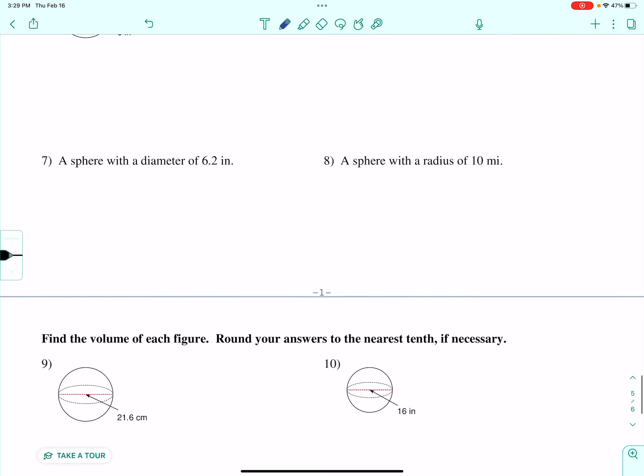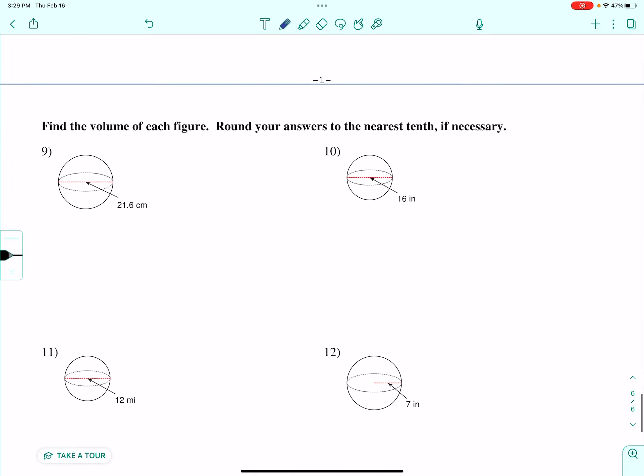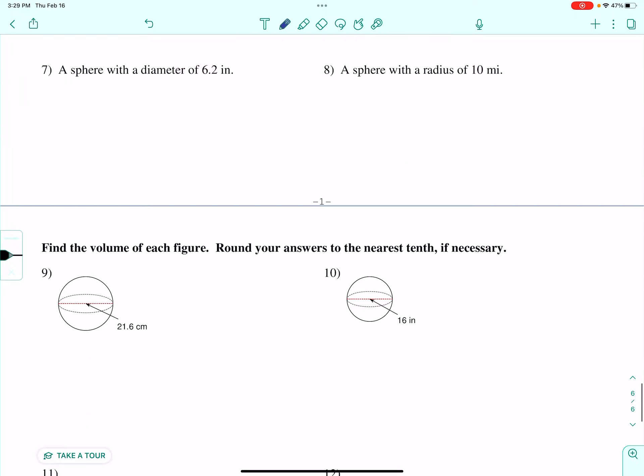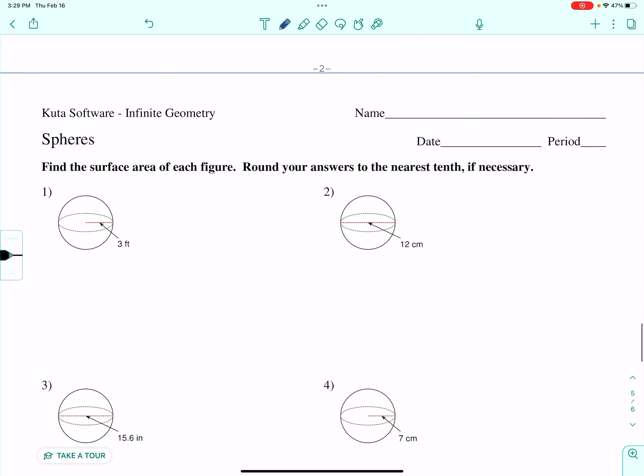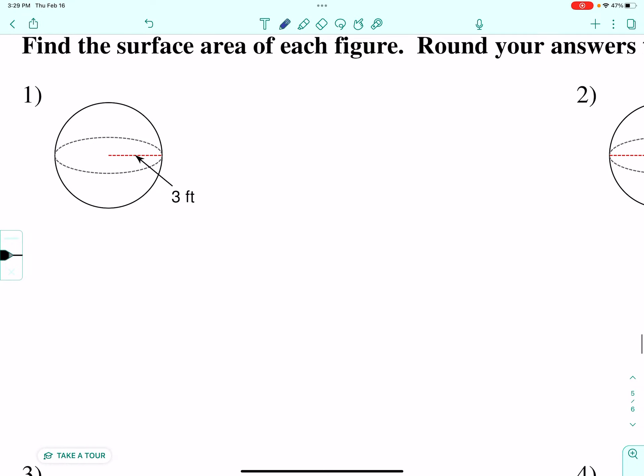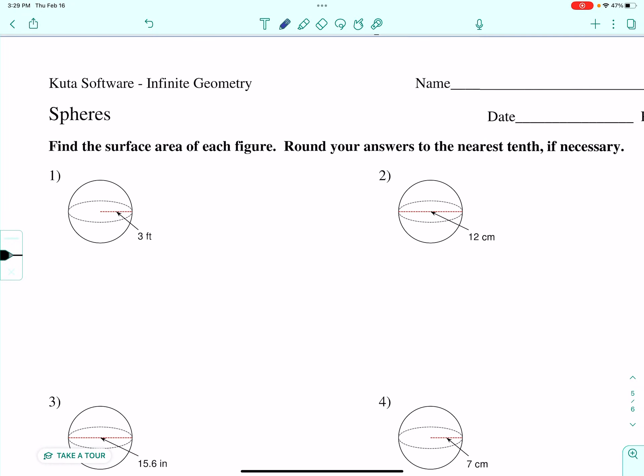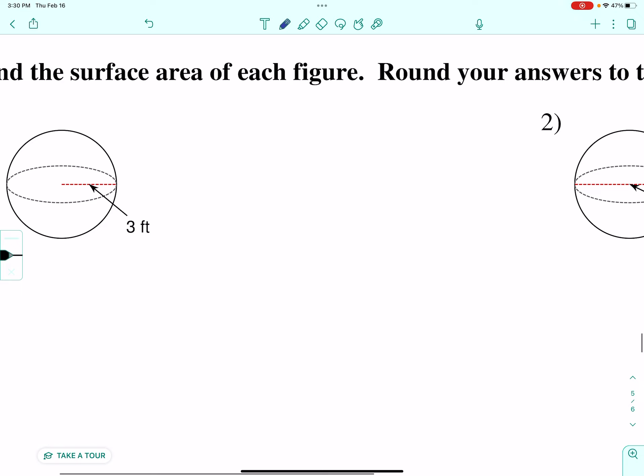Now, this only says to find the surface area. It has volumes underneath. I think what we're going to do is combine them into one problem. These say to find it to the nearest tenth. Since it says surface area, we'll do that first. All I need is a radius. So, here's my radius. My radius is three feet.